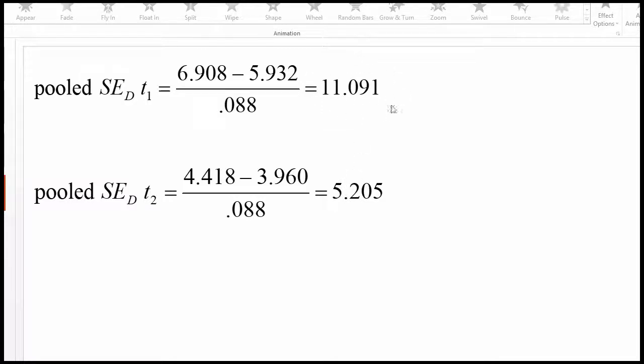And when I divided those differences between the means, I got these t values, 11.091 and 5.205. And what the interaction is saying is that the magnitude of the difference in the t values is statistically significant.